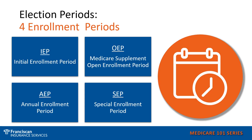Typically, there are four different election periods or enrollment periods. The first one is the initial enrollment period when you first turn 65. Then there is the Medicare Supplement open enrollment period. There's the annual enrollment period, which happens every year from October 15 to December 7. And then there are special enrollment periods — there are several that someone could qualify for.